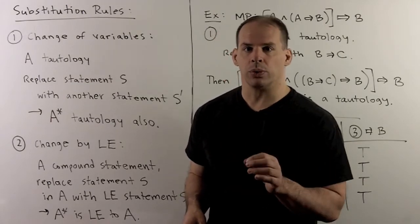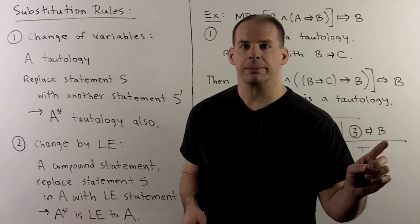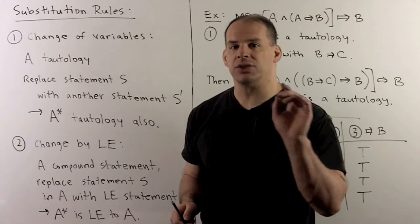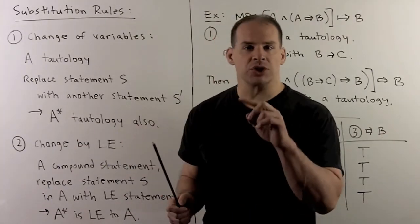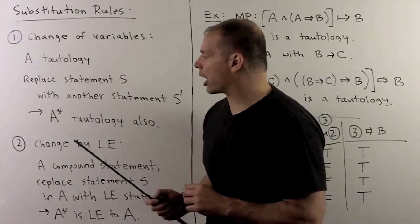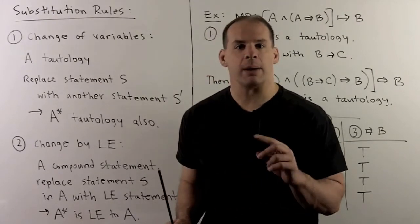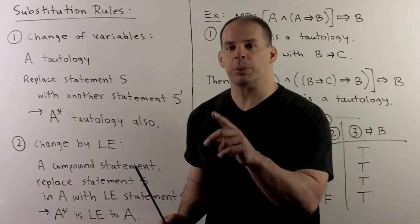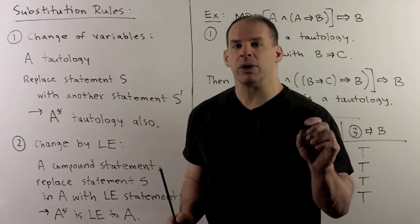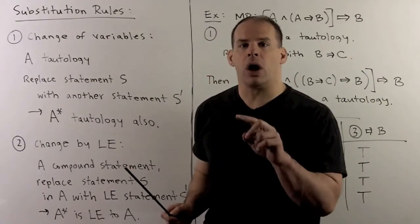One final item: substitution rules. These rules let us take statements with certain properties, perform a substitution, and get another statement with the same properties. The first case is change of variables, which lets us turn old tautologies into new tautologies. If A is a tautology constructed using statement S, we can replace S with another statement S-prime to yield a new tautology A-star. The second type is change using logical equivalence — it's easier to understand with examples.